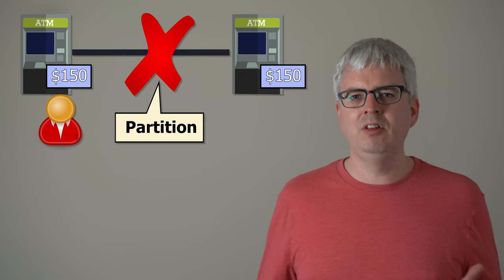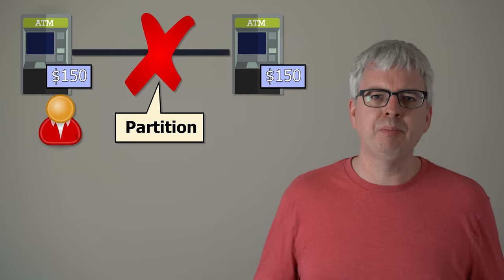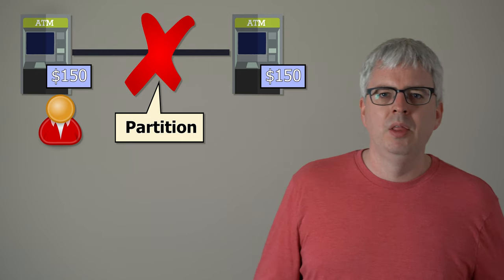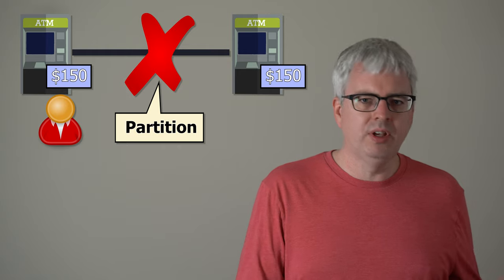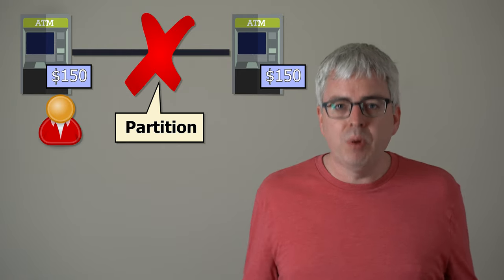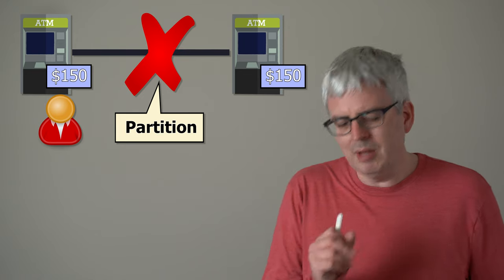The distributed system has suffered a partition in this case. So what does the ATM do next when this partition happens? This is the design decision that the CAP theorem talks about. The system has to then make a choice. It can either be consistent or available, but it can't do both.